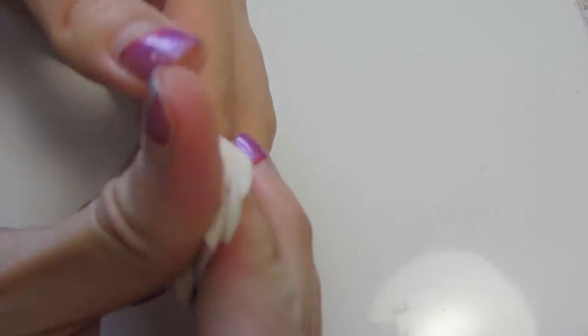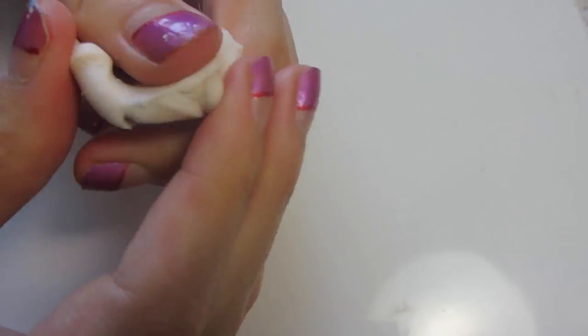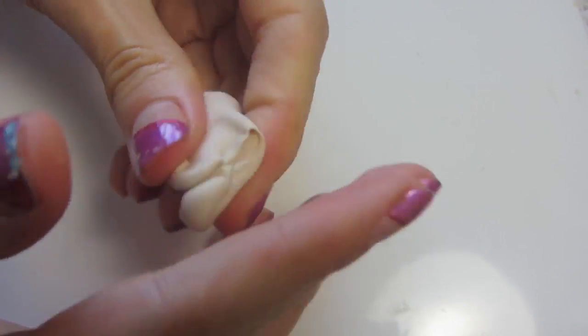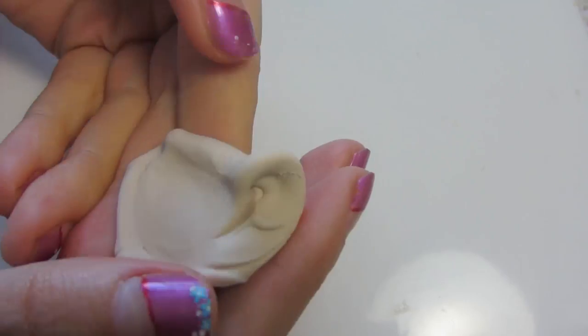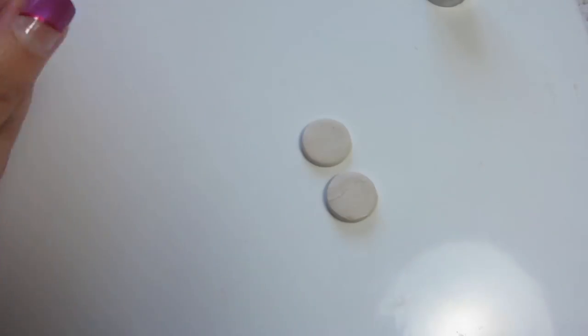So the first step is to mix translucent and Sahara and once you've mixed that all up you'll roll that out to a thin sheet. Remember to always use more translucent.